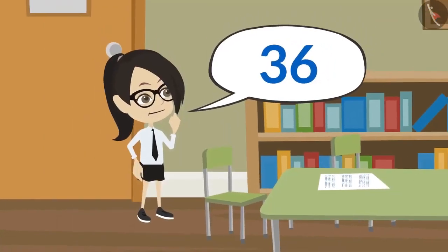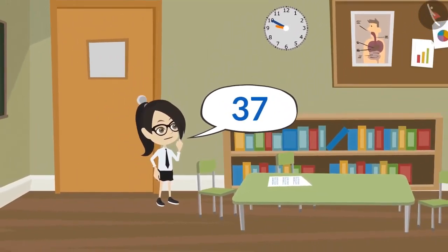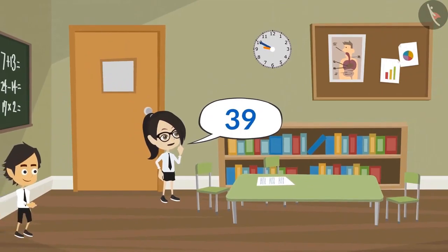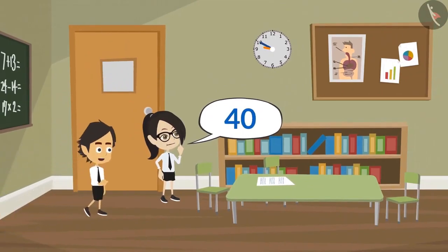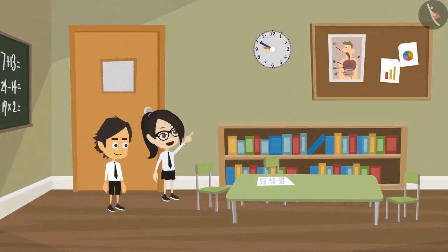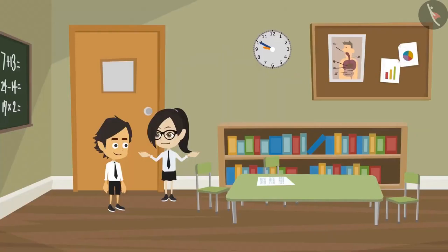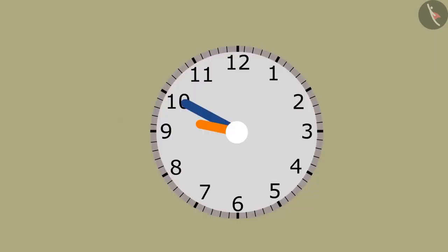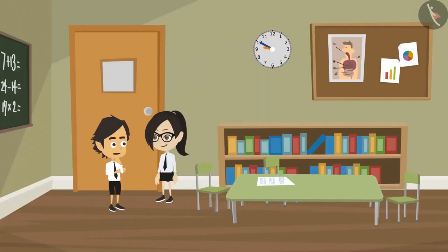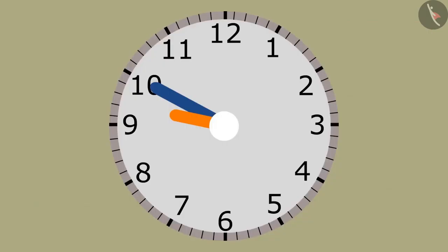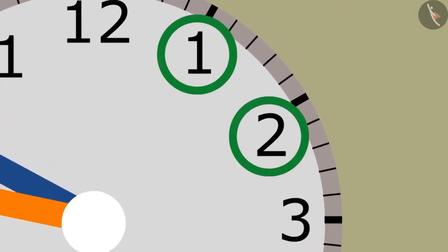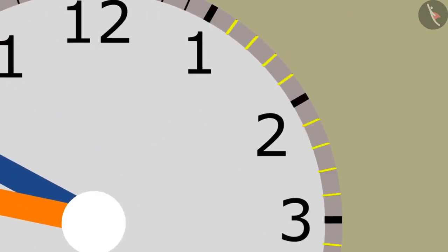35, 36, 37, 38, 39, 40. What are you counting, Vandana? I am counting the minutes on the clock. You interrupted me and now I have forgotten. I was finding out how many minutes have passed. How are you counting the minutes? Look at the numbers on the clock — the small markings in between them tell the minutes. These have to be counted to find out the minutes.